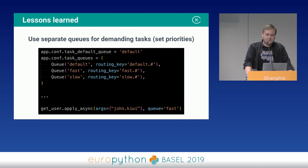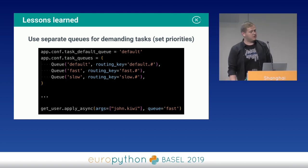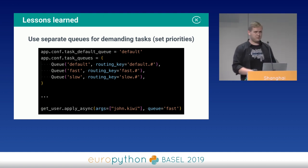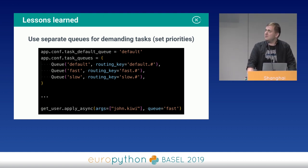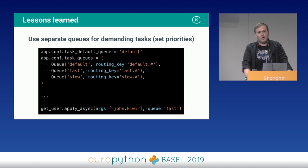With apply_async, you just specify the queue and you're good to go. It will help tremendously. And when you have multiple queues, always deploy multiple workers that handle only that specific queue.